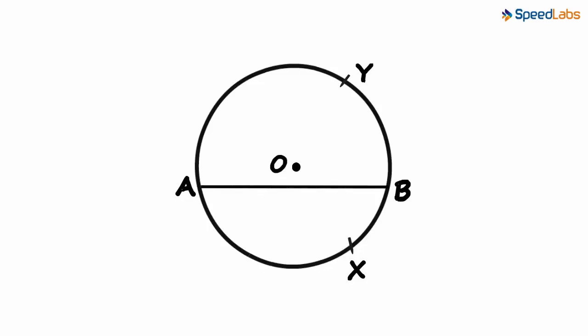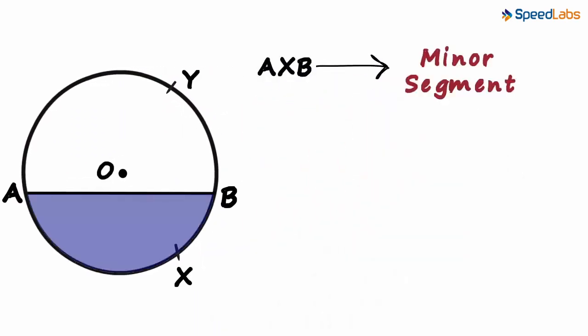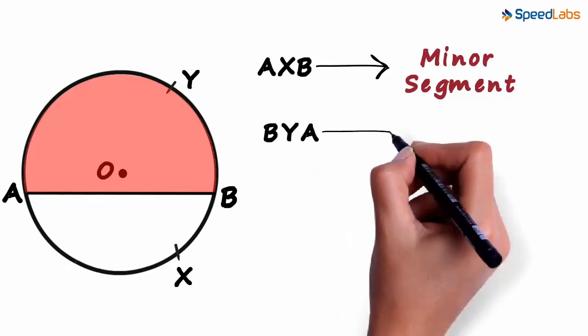There is another small thing we need to know about the angles that are formed within a segment. Consider this figure in which chord AB divides the circle into two segments, segment AXB and segment BYA. As we can clearly see, AXB is the minor segment and BYA is the major segment.